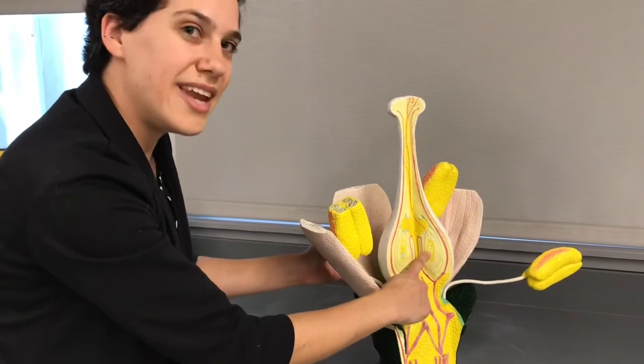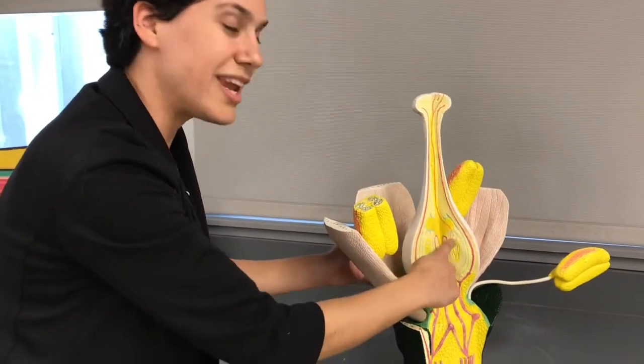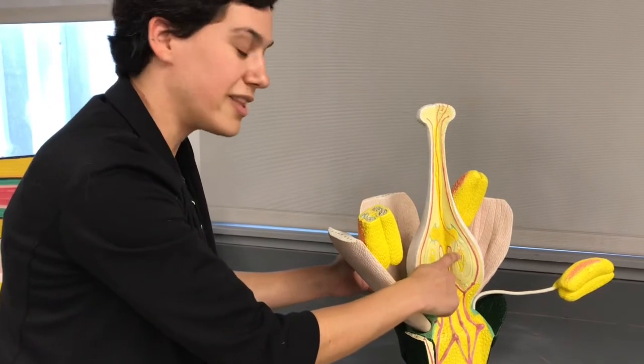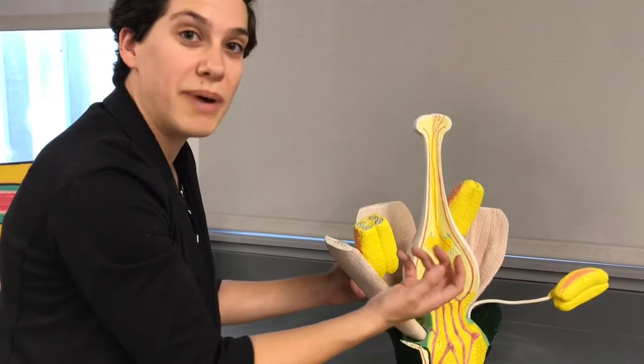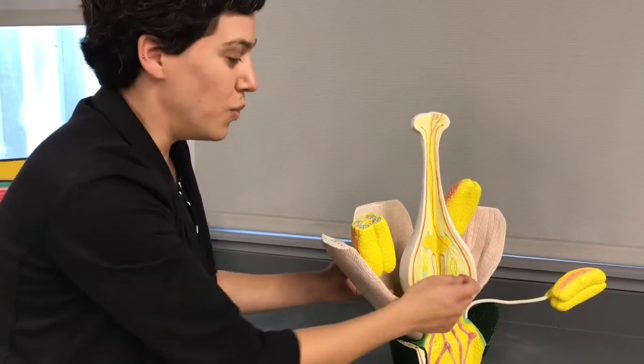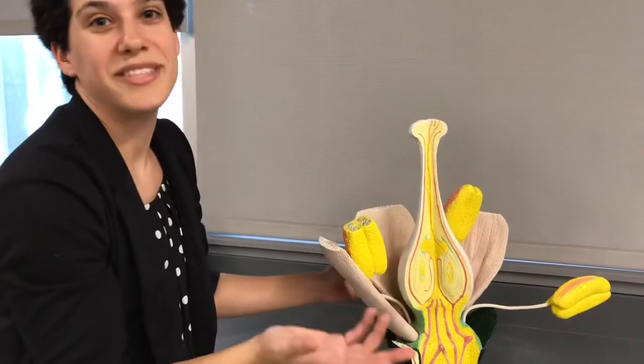That ovule has an egg inside. And the pollen has a sperm inside. When the sperm from the pollen and the egg from the ovule combine in fertilization, we can get a fertilized ovule, which will become a seed.